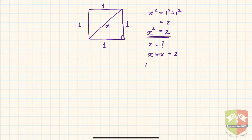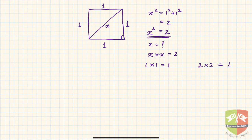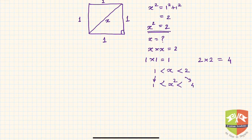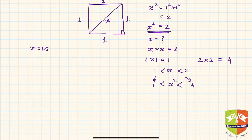To find x, I started trial and error. I tried 1: one times one is 1, which is less than 2. I tried 2: two times two is 4, so x lies between 1 and 2. Then I tried x equals 1.5: x squared is 2.25, which is greater than 2. So x is not 1.5. I tried x equals 1.4: x squared is 1.96, which is less than 2.